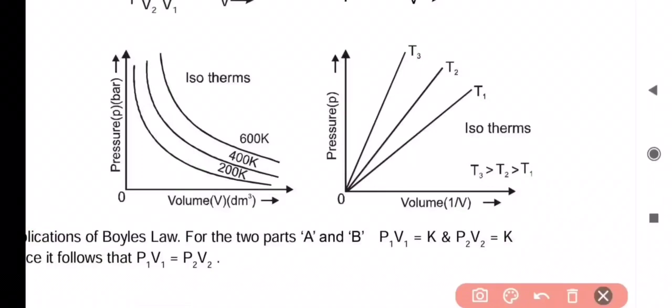In the third graph we see that the pressure versus one by volume is also constant, and when the temperature is high then the pressure is also high. Therefore we can say that their slope is more when the temperature is more.